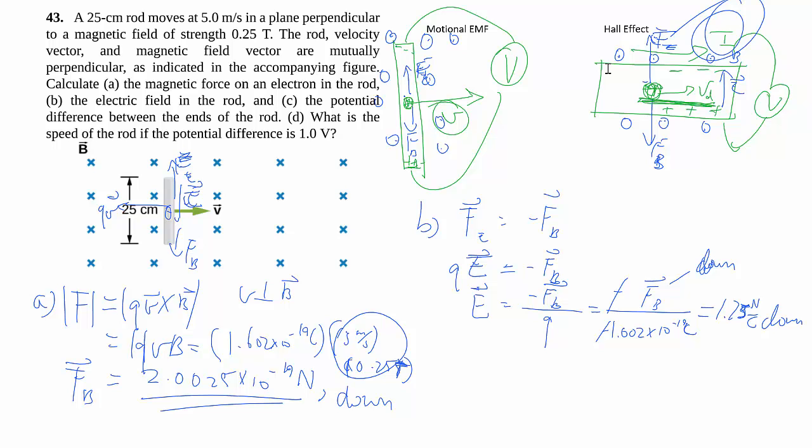Now that we have the electric field, we can find the potential difference by doing this integral. We already talked about how the electric field should be uniform inside, so this is simply E times ℓ. We already got the E; we multiply by the ℓ, which is 25 centimeters, so 0.25 meters. That's 0.3 volts or thereabouts. And that's the process of working out this Motional EMF.